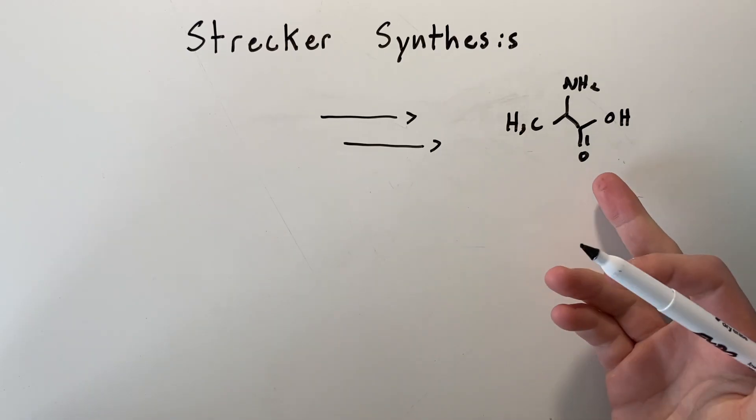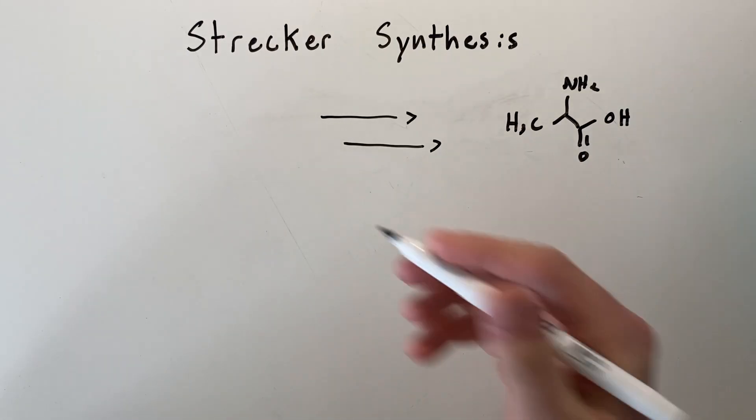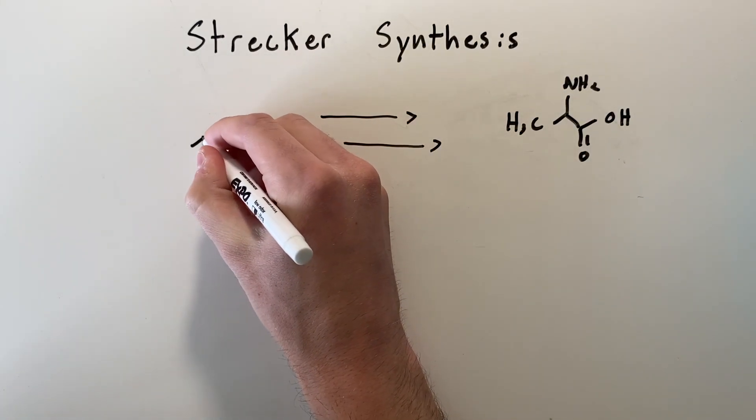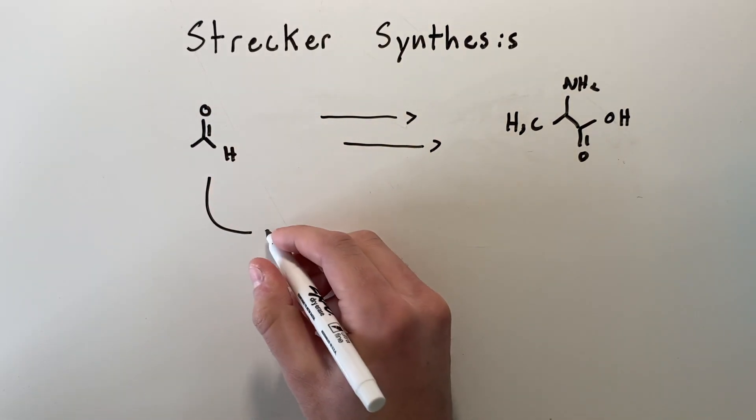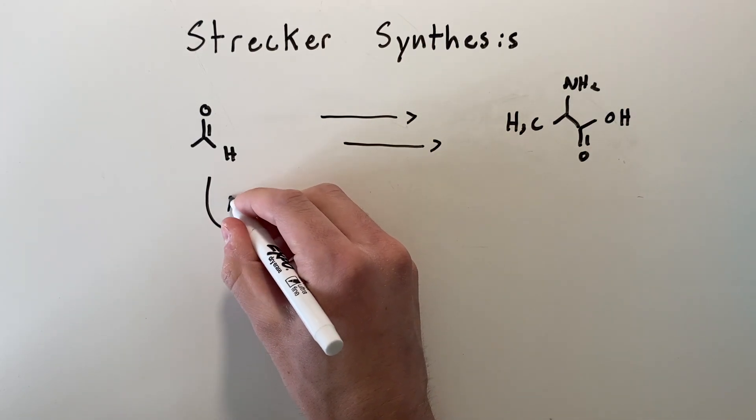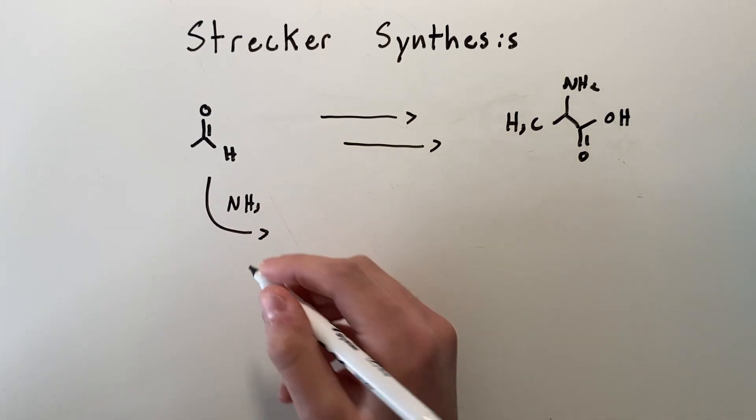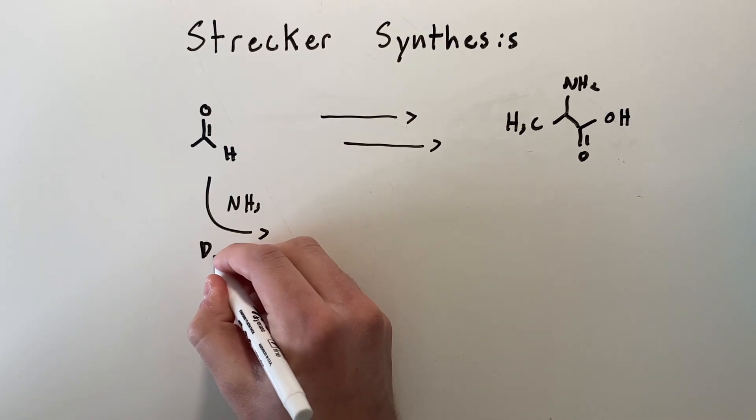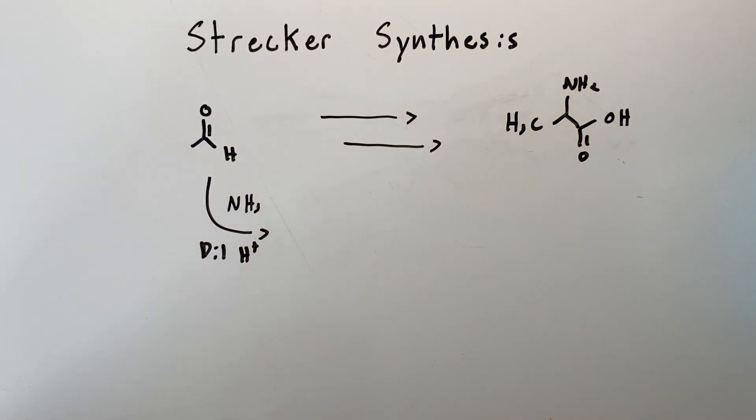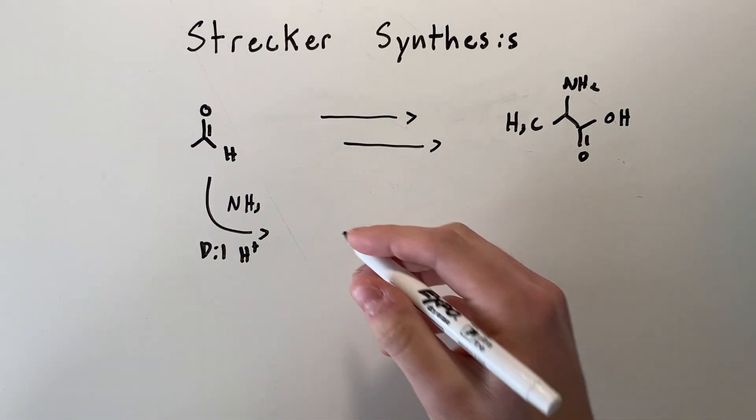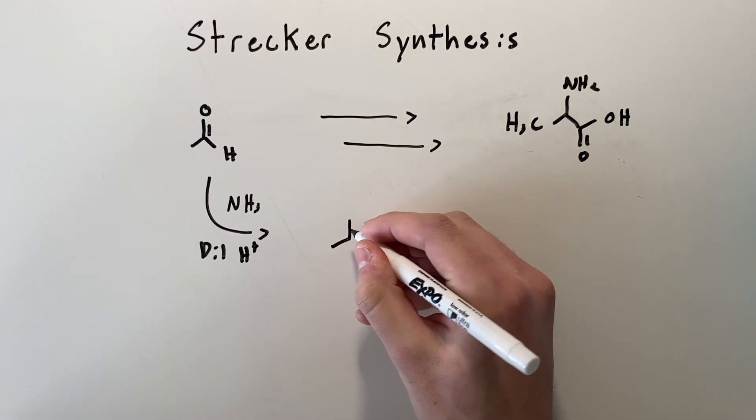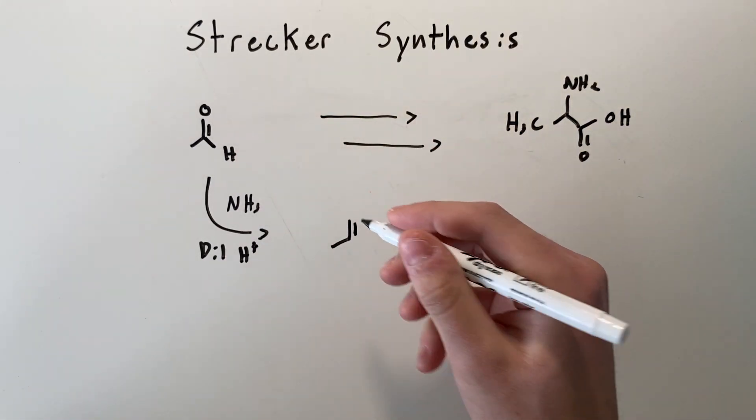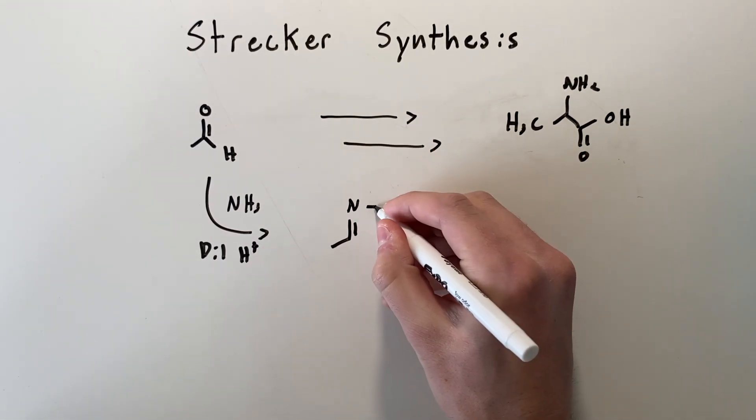So in order to get this molecule in the Strecker synthesis, we're going to go ahead and start with acetaldehyde. And the first reagent which we will add will be ammonia and dilute H⁺. This is a reaction that is pretty fundamental with our aldehydes or our carbonyl compounds. What will happen is the N will just replace the ketone and form what's called an imine.